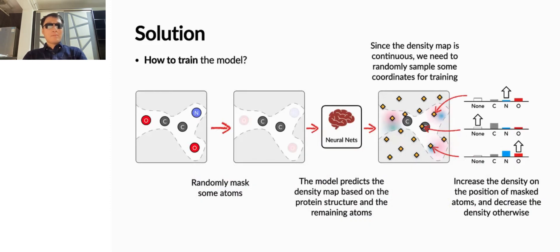The last problem is how to train such a model. The training data is a paired protein-drug 3D structure. We first mask some atoms in the drug molecules. Then, we feed the structure to the model to predict a density map. We increase the density on the position of masked atoms and decrease the density otherwise.